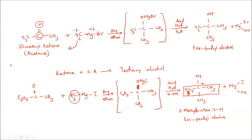This is very significant. To summarize: formaldehyde with Grignard's reagent gives a primary alcohol, acetaldehyde gives a secondary alcohol, and any ketone gives a tertiary alcohol. That is how different carbonyl compounds with Grignard's reagent produce different types of alcohols.